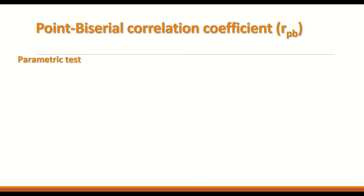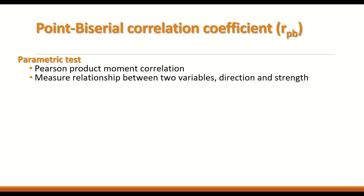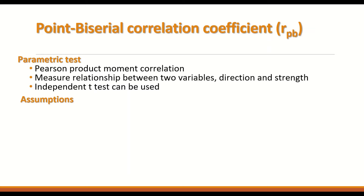For the Point Biserial Correlation Coefficient, it is a parametric test. It is based on the Pearson product-moment correlation coefficient. It measures the relationship between two variables, including the direction and the strength of that relationship. An independent T-test can also be used to calculate some of the parameters in the test.